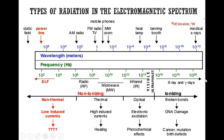X-rays and gamma rays are ionizing because, as mentioned earlier, they can create ions, break bonds, cause DNA damage, and lead to cancer, mutation, and birth defects. On the left side of the electromagnetic spectrum, if we draw a line here, this is where we divide the ionizing from the non-ionizing. On the left side we have non-ionizing radiation, which we can look at in three different parts.